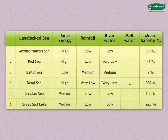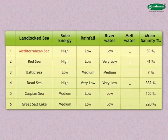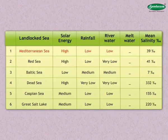Now let us see the salinity of landlocked or partially enclosed seas. In the Mediterranean Sea, the solar energy received is high, the rainfall is low, the supply of fresh water by rivers is low, and the mean salinity is 39 per thousand.